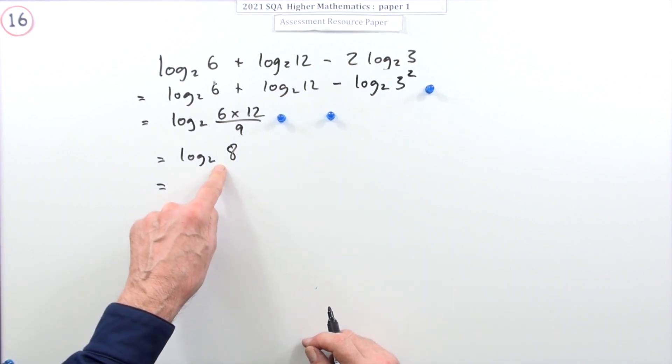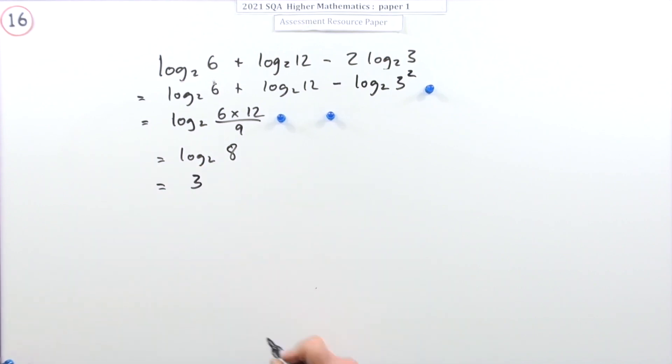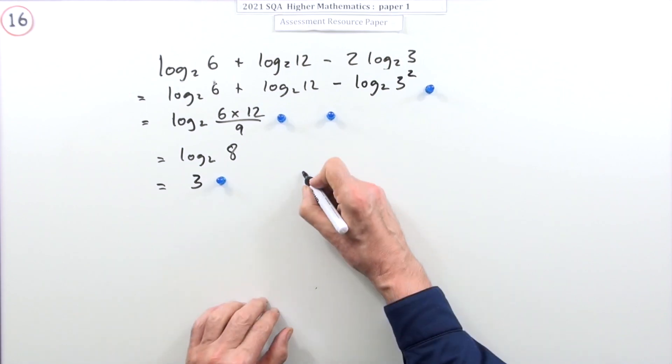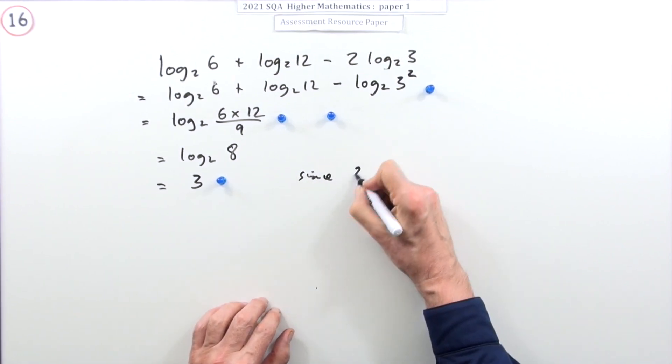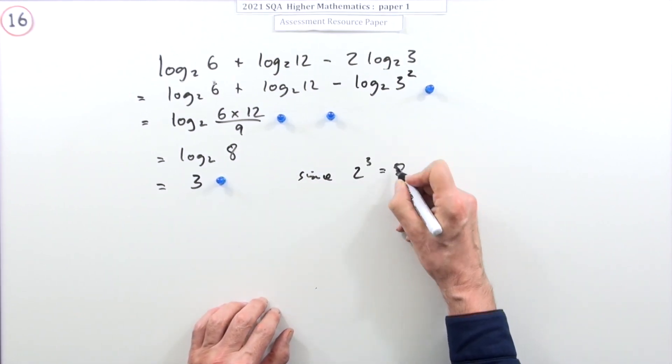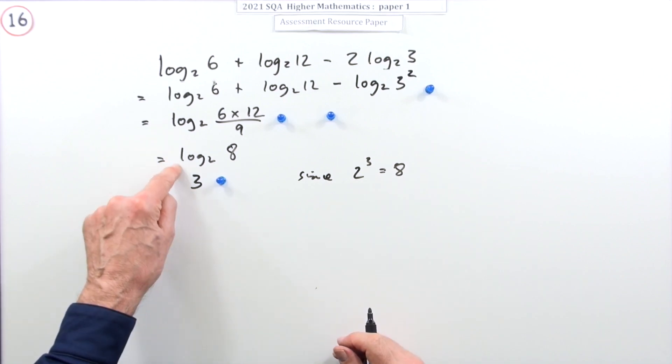Now it just comes to what does log mean? Log base 2 means what power of 2 is 8? Well that's 3. You can always give the reason: since 2 to the power of 3 is 8, and the logarithm says what power of 2 have I got.